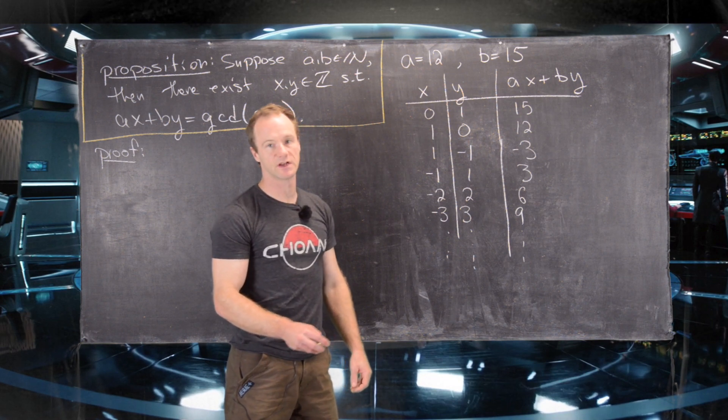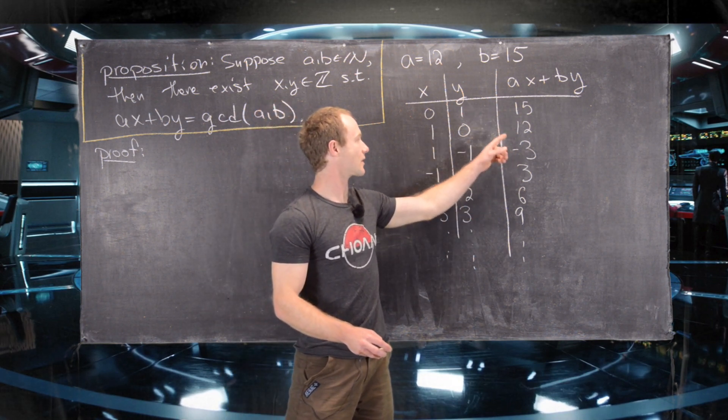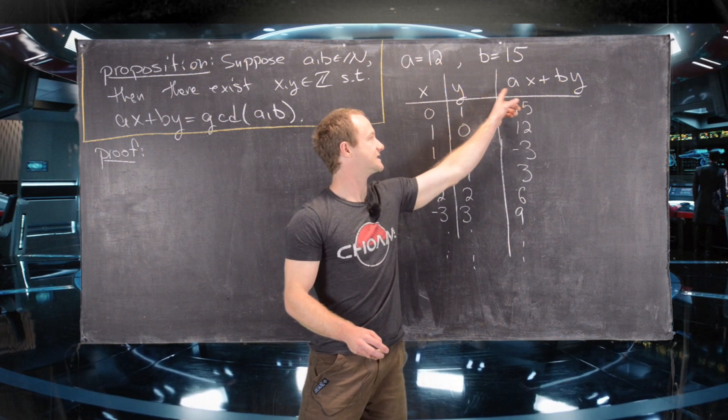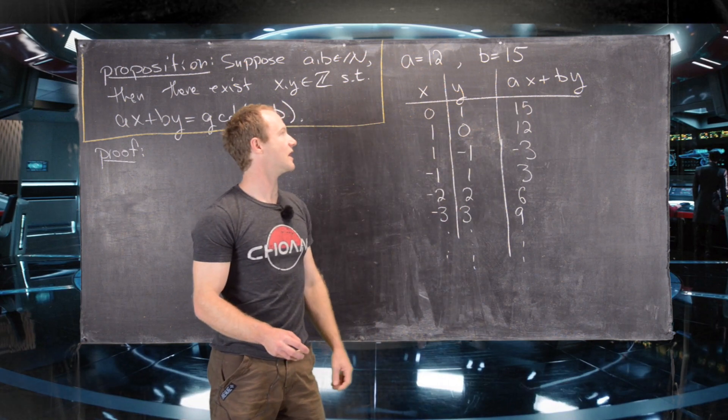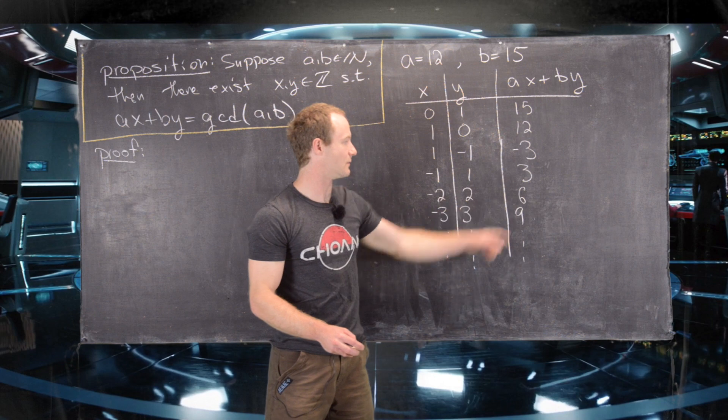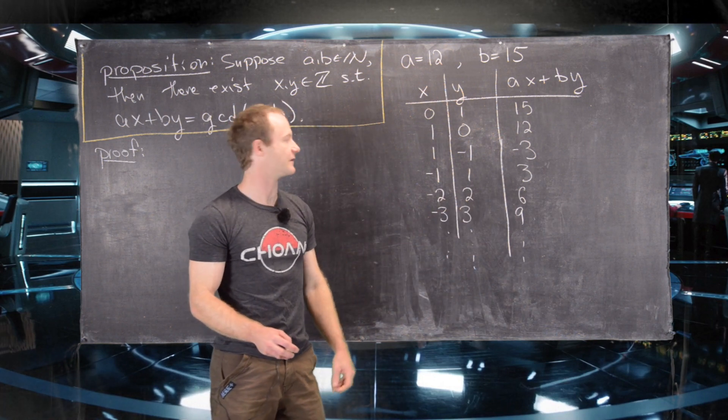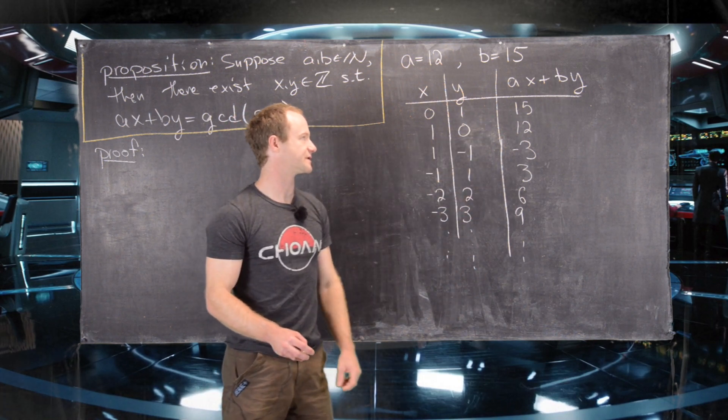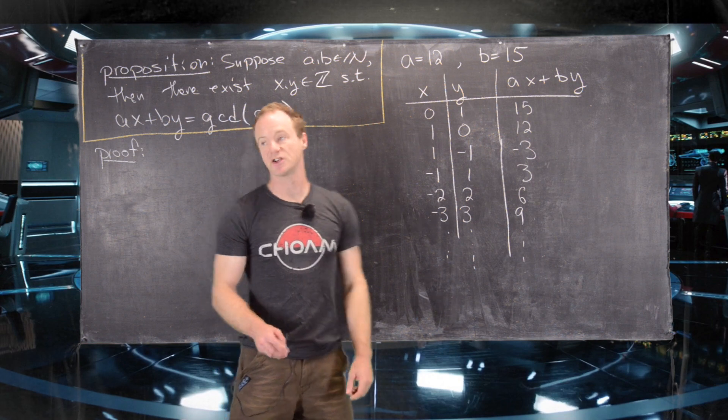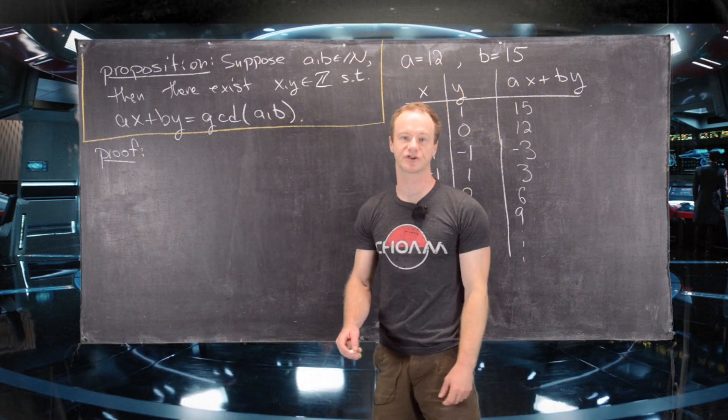Another thing to notice is that every number that exists as a linear combination of 12 and 15 is actually a multiple of the GCD of 12 and 15. Look, we're only getting multiples of 3 over here. So that should give us some motivation for how to start the proof.